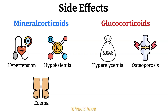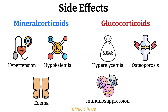Glucocorticoids also interfere with calcium absorption in the GI tract, reducing the amount available for bone formation. With long-term use, significant immunosuppression can occur. The generally accepted threshold is prednisone or equivalent 20 mg or more per day for two or more weeks. Glucocorticoids can cause mood swings due to their influence on brain neurotransmitters and receptor function, especially dopamine and serotonin.